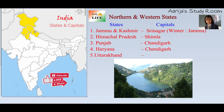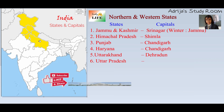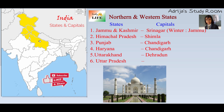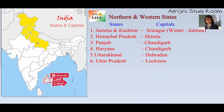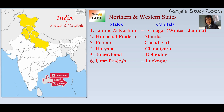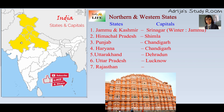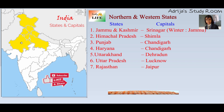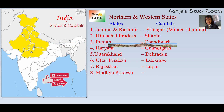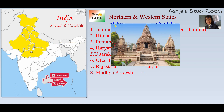This is Uttarakhand, and its capital is Dehradun. And this state is Uttar Pradesh — it is the most populated state in India. And this state is Rajasthan, and its capital is Jaipur. Rajasthan is the largest state in India.